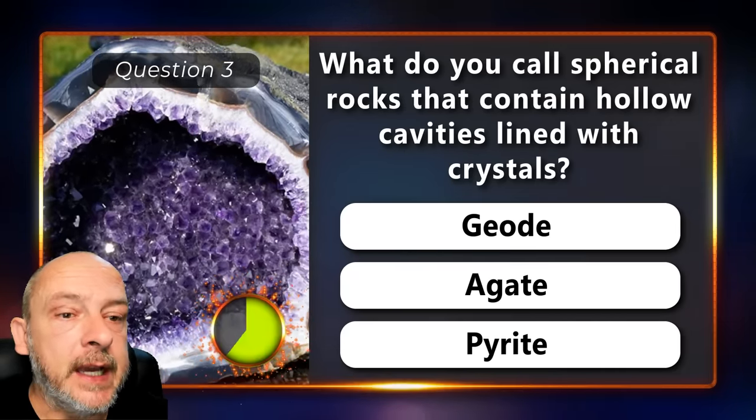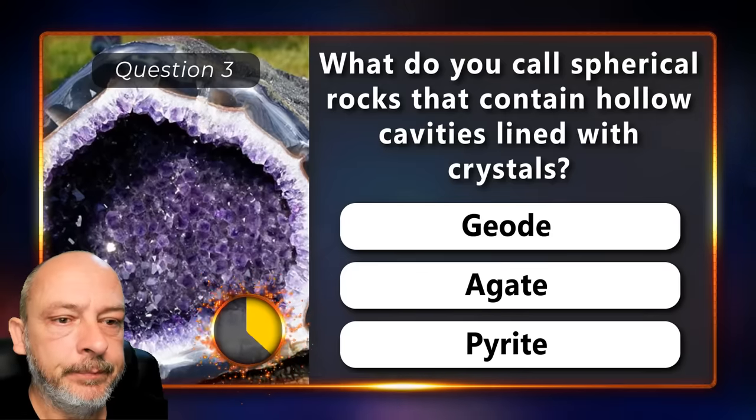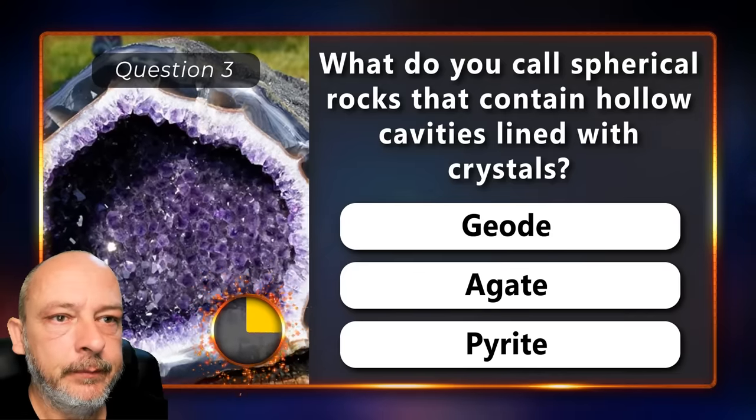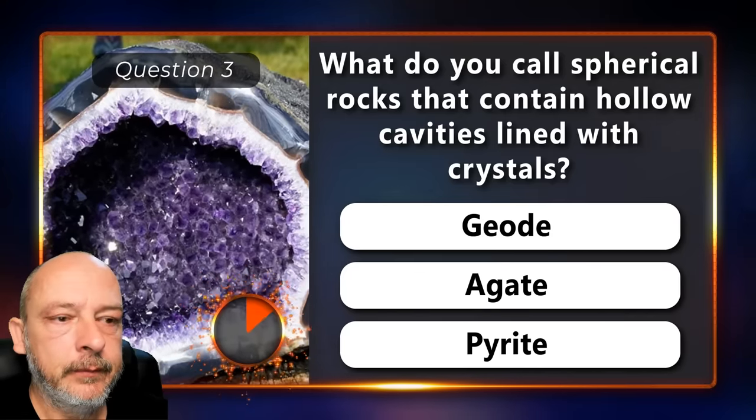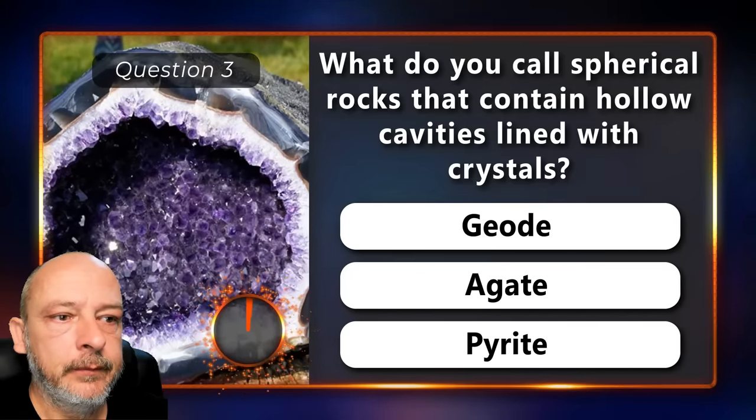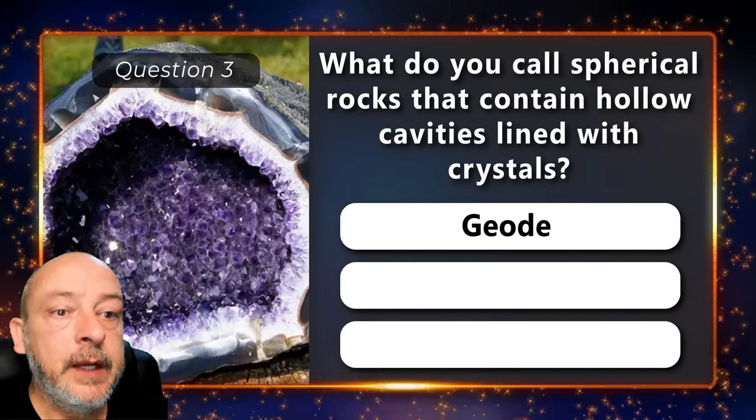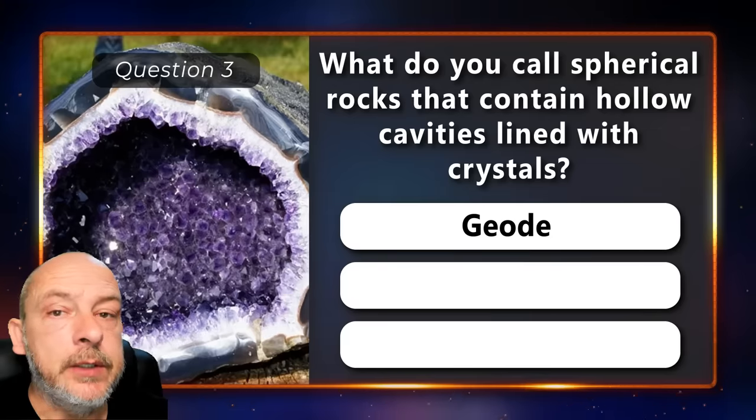What do you call a spherical rock that contains hollow cavities lined with crystals — a geode, an agate, or pyrite? It is a geode.